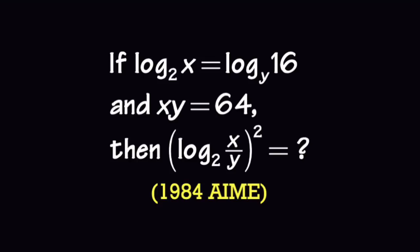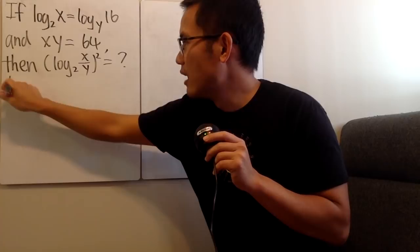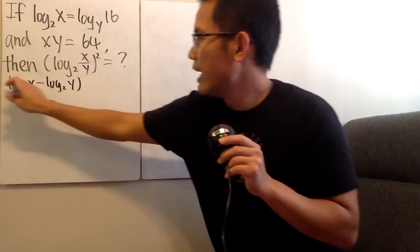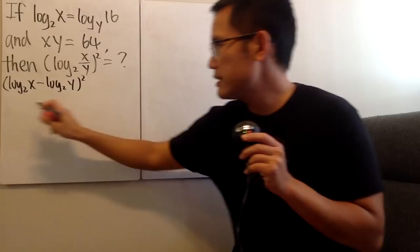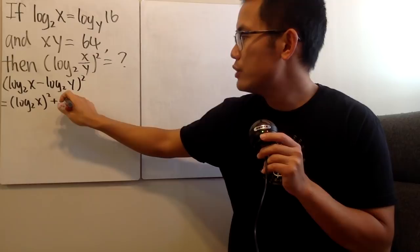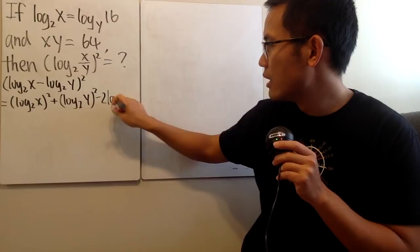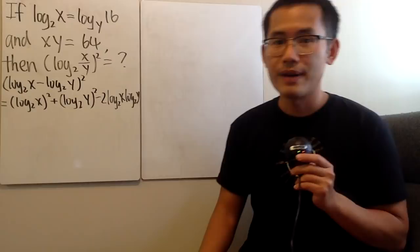For the second question, we have log base 2 of x is equal to log base y of 16, and xy is equal to 64. I think this is how I'm going to do it. Because we know this, we can write it as log base 2 of x minus log base 2 of y, and then square the whole thing. Multiplying this out, we get log base 2 of x squared, plus log base 2 of y squared, minus 2 times log base 2 of x times log base 2 of y.